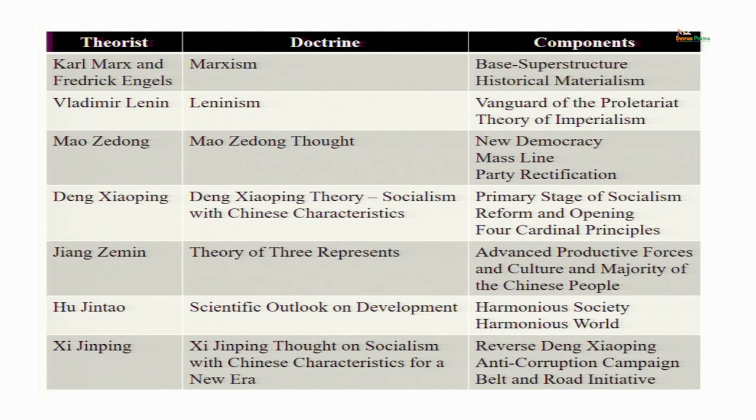In feudal society it is the aristocrats who are the ruling class; in capitalist society it is the bourgeois — traders and business people — who become the new ruling class. They gradually demand more power; democracy and parliament are introduced or a revolution like the French Revolution happens. Marx divided history into different stages: primitive communism, then slave society, then feudal society, then capitalist society, and then socialist society.